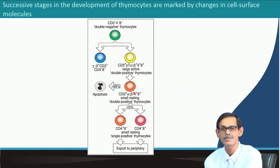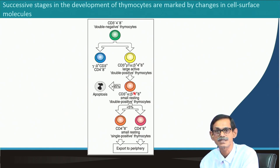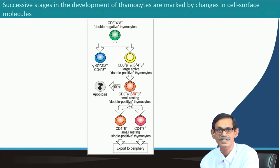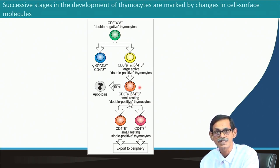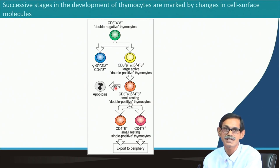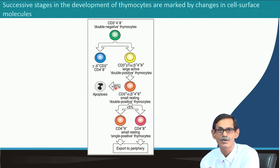At this stage it becomes CD3 plus, both alpha-beta plus, then CD4 plus CD8 plus — this is the double positive cell stage. In this stage, the cell is looking for self-MHC recognition. The T cell receptor is already made with a variety of diversity to identify the most diverse pathogens. However, T cell receptors cannot recognize antigens without MHC, so the alpha-beta receptor must recognize the MHC — this is called positive selection.